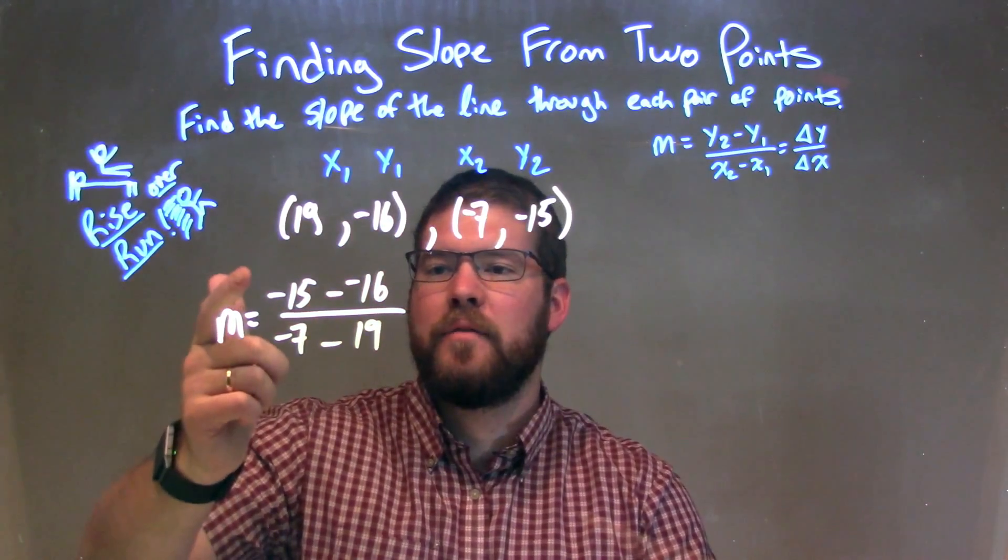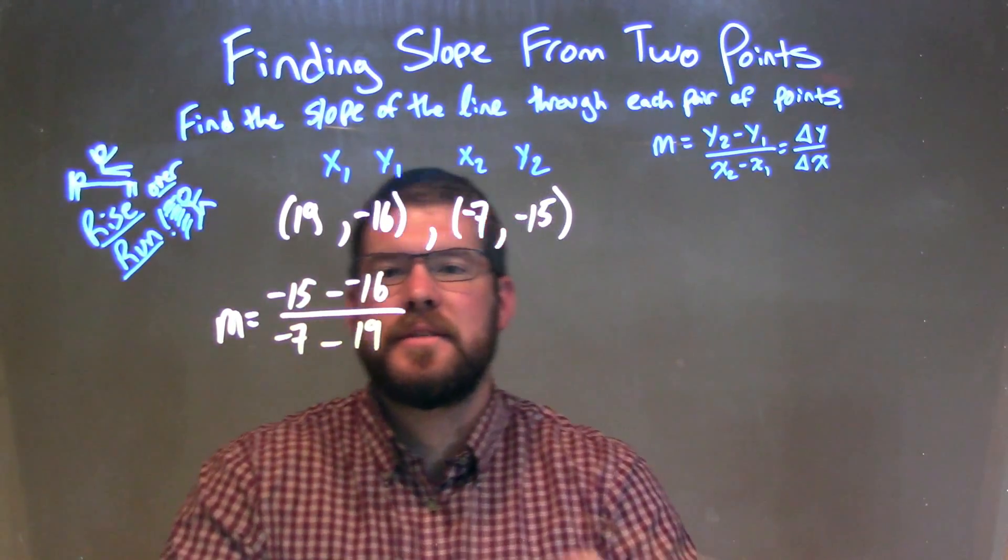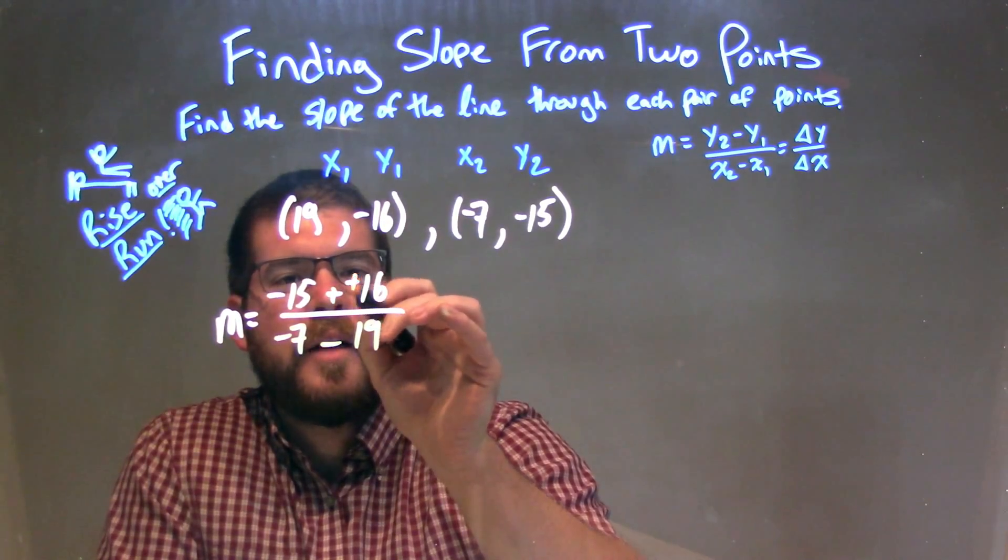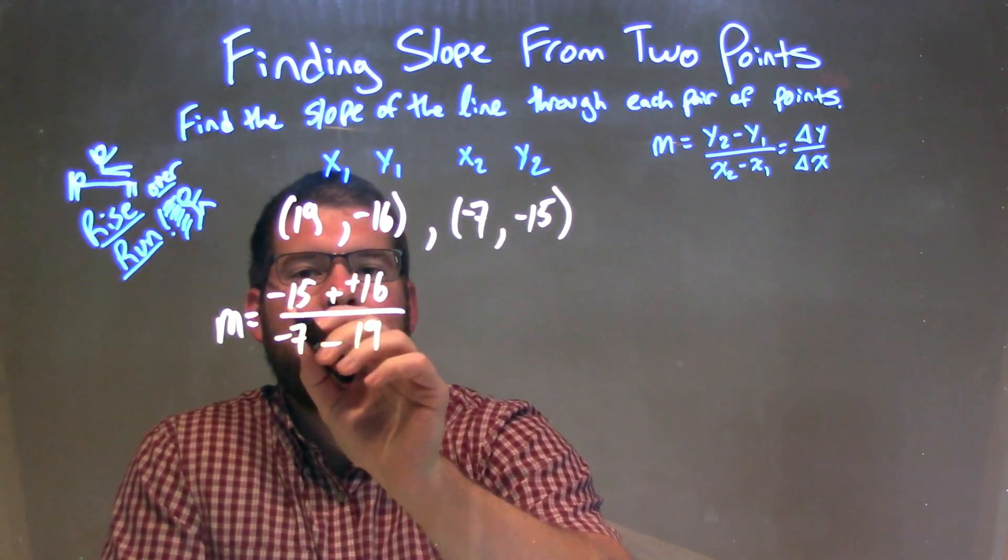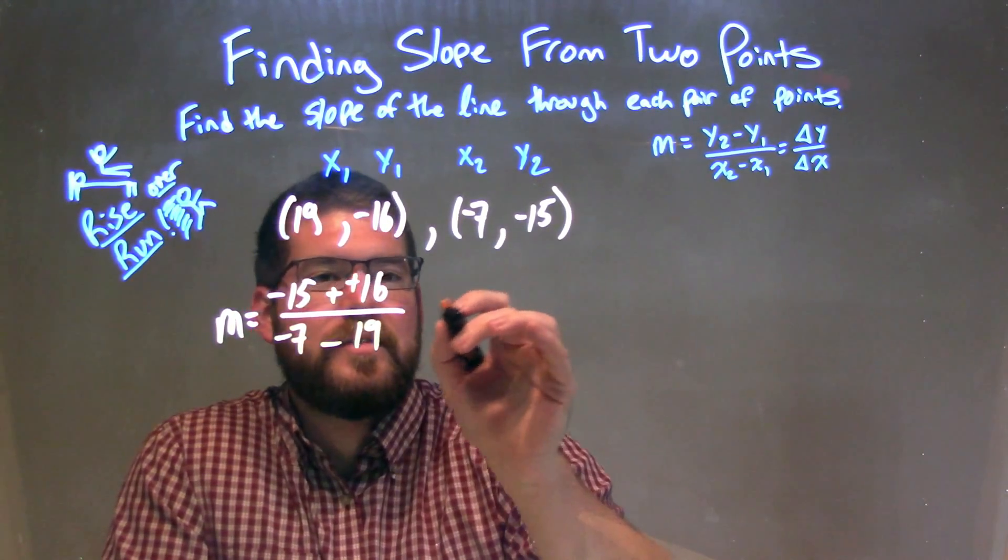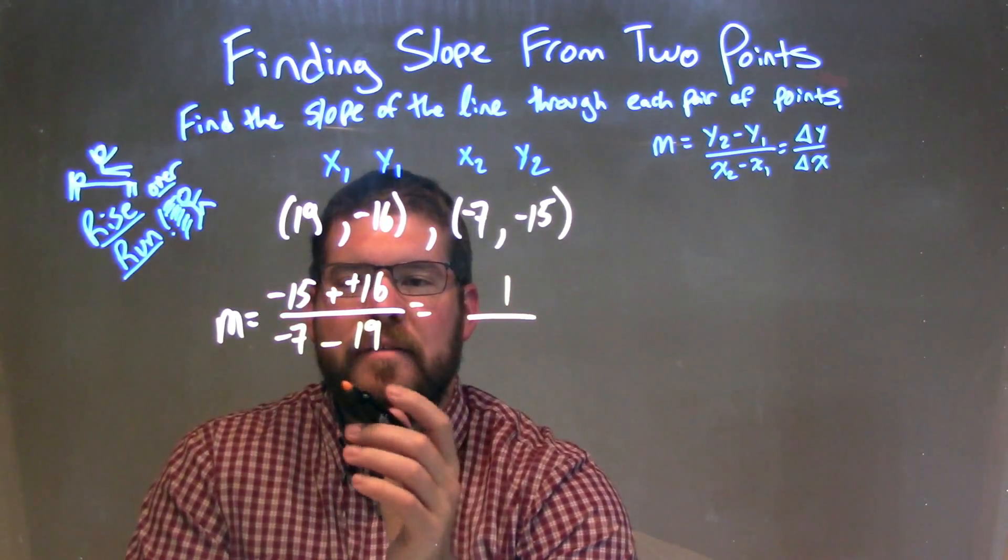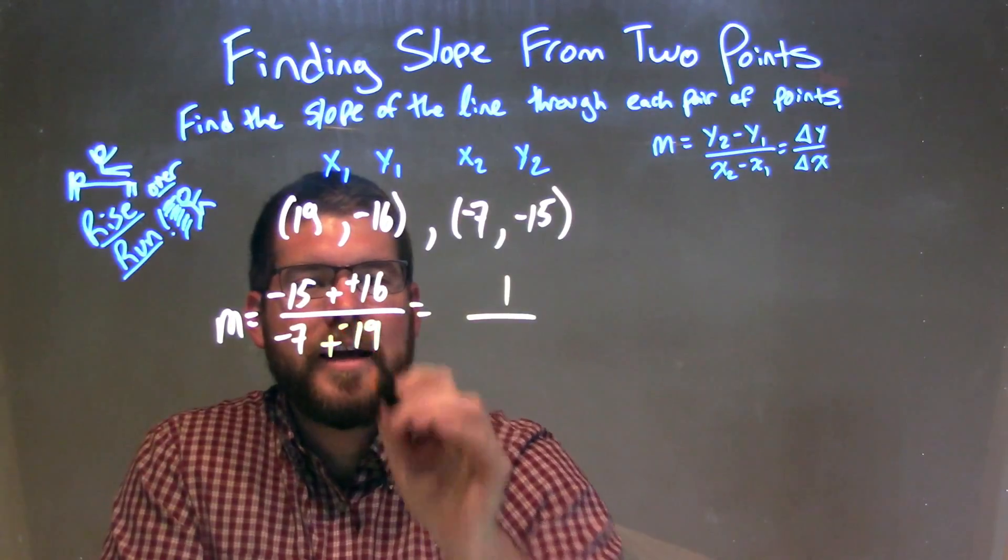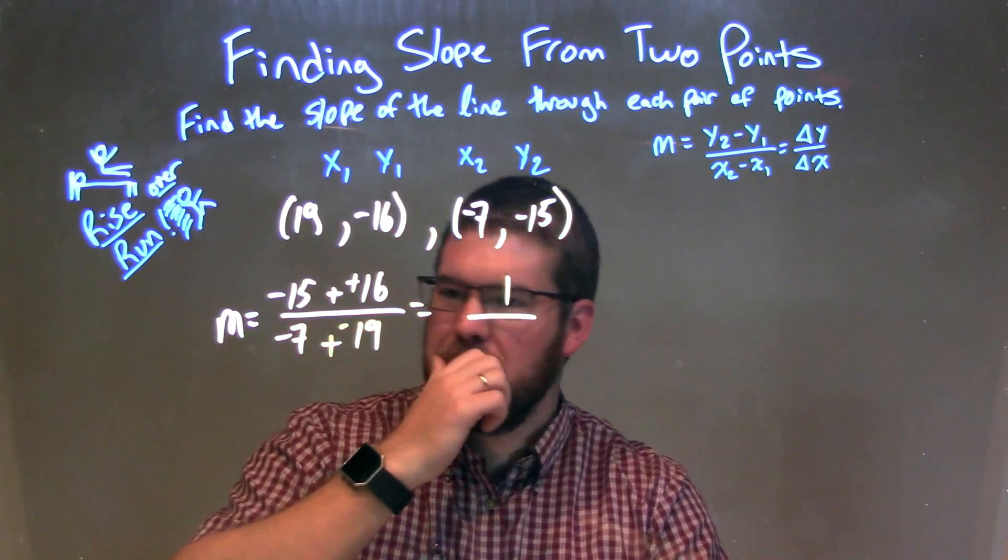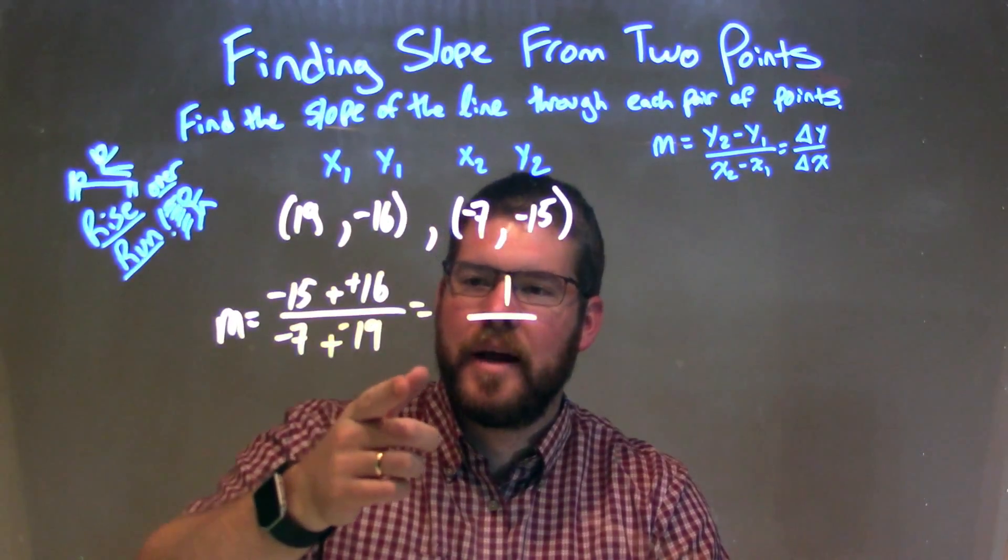So now we have M equals negative 15 minus negative 16. We have plus a positive there, so negative 15 plus a positive 16 is a positive 1. And then we have negative 7, and minus 19 is adding a negative.